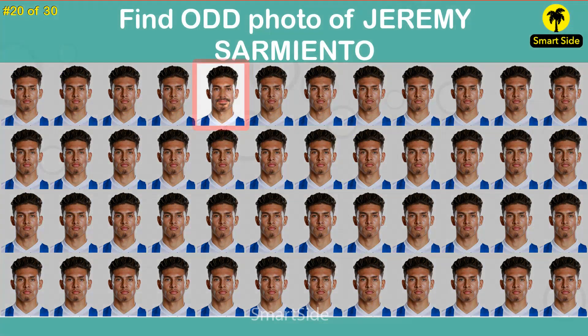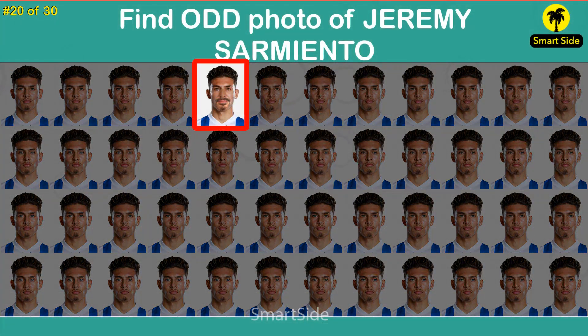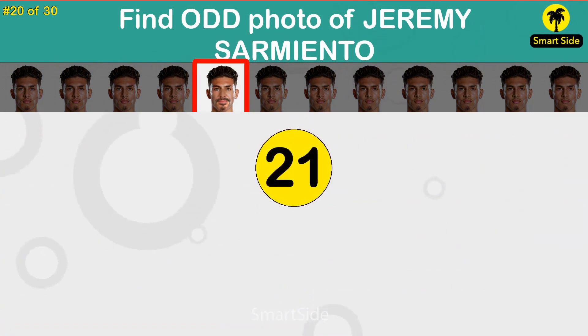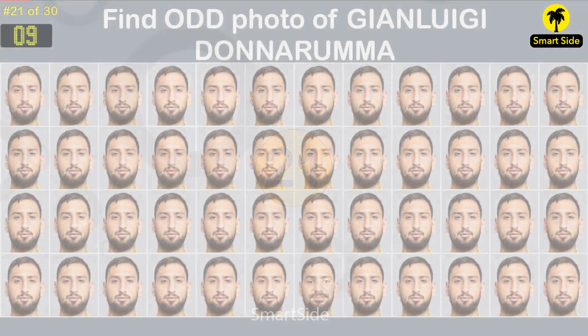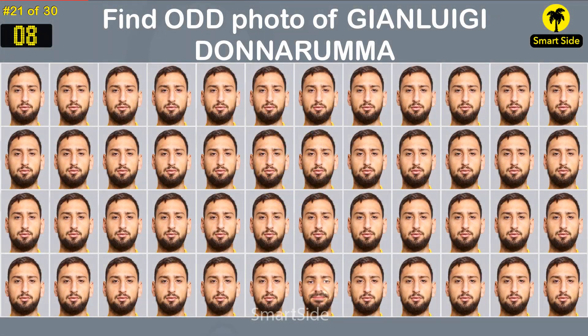The answer is this one. Question number twenty-one. Find the odd photo of Yanluji Donnarumma.